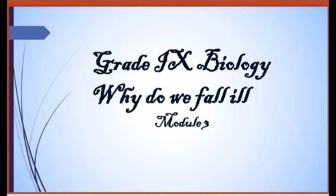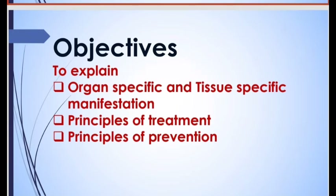Grade 9 Biology, Lesson: Why Do We Fall Ill, Module 3. Objectives: to explain organ-specific and tissue-specific manifestation, principles of treatment, and principles of prevention.